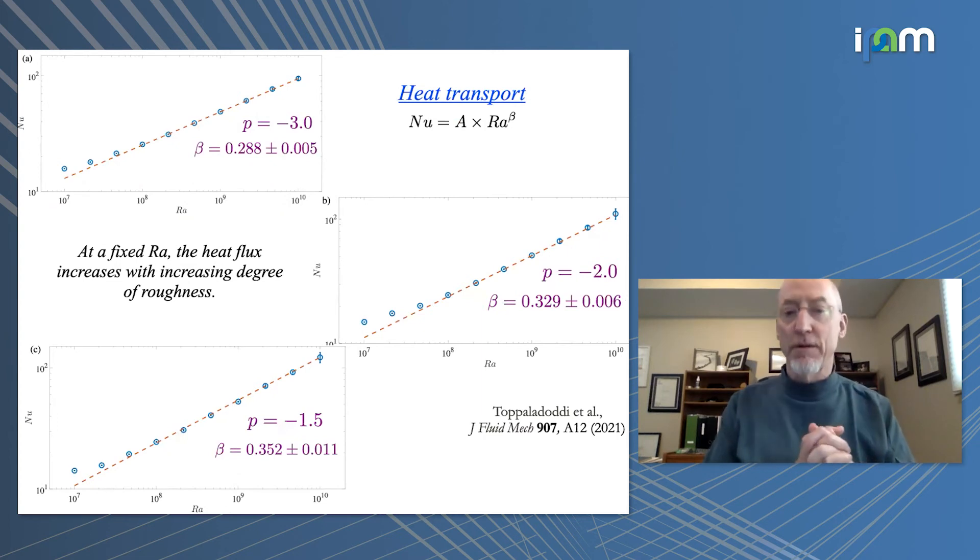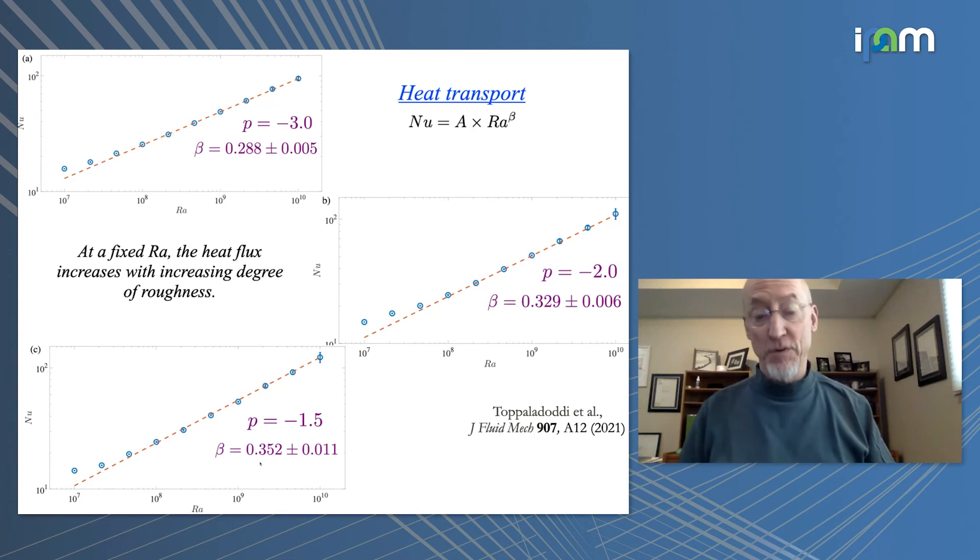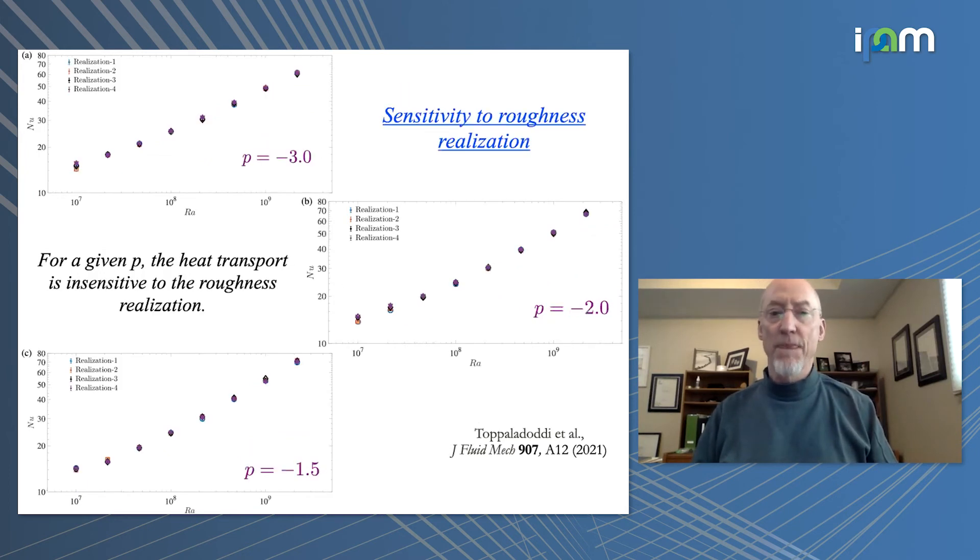And hence, the heat transport is enhanced. So these, for those three cases, this is Nusselt-Rayleigh. And you see that beta goes from roughly, actually, the Johnston-Doering value, in this case, to larger than one-third, but of course not one by two. So at fixed Rayleigh number, the heat flux increases with increasing degree of roughness.